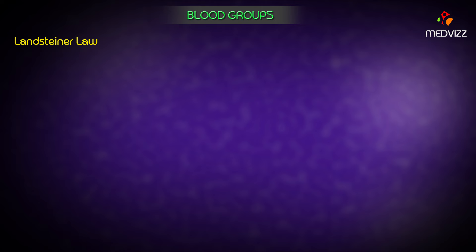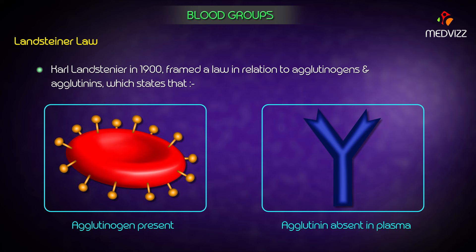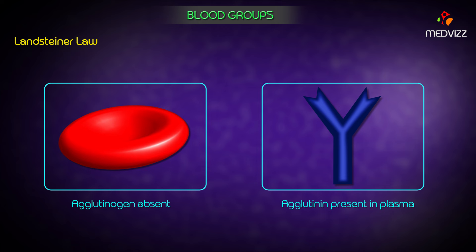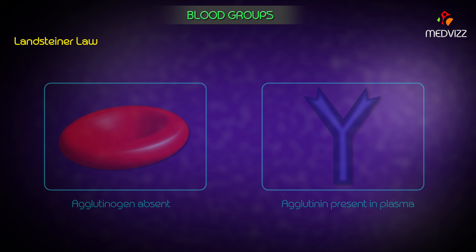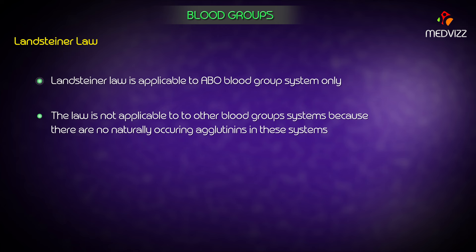Landsteiner's Law: Karl Landsteiner in the 1900s framed a law stating that if an agglutinogen is present on the red cell membrane, the corresponding agglutinin must be absent in the plasma; and if an agglutinogen is absent from the RBC membrane, the corresponding agglutinin must be present in the plasma. This law is applicable to the ABO blood group system only, as there are no naturally occurring agglutinins in other systems.